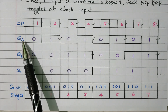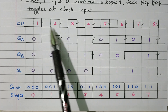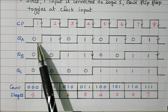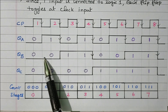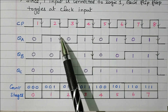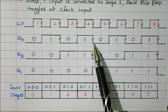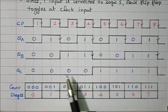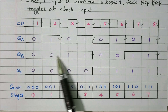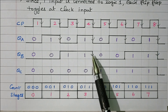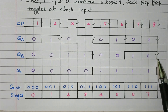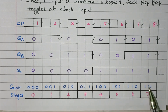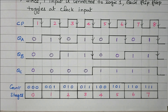To summarize: the first flip-flop toggles on every trailing edge of the external clock since an inverted clock pulse is given. The second flip-flop toggles whenever the first flip-flop output QA transitions from high to low. The third flip-flop toggles whenever the second flip-flop output QB transitions from high to low. Accordingly, we get the 8 different output combinations of the 3-bit asynchronous counter.